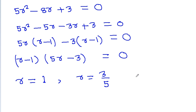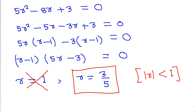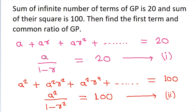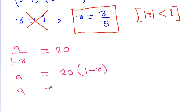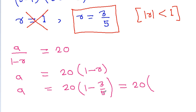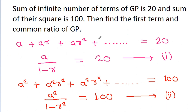For the sum of infinite terms to exist, |r| must be less than 1, so r cannot equal 1. Hence r = 3/5. Substituting back: a = 20(1 - 3/5) = 20 × (2/5) = 40/5 = 8. Therefore, the first term a = 8 and the common ratio r = 3/5.